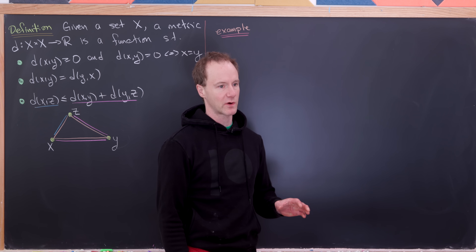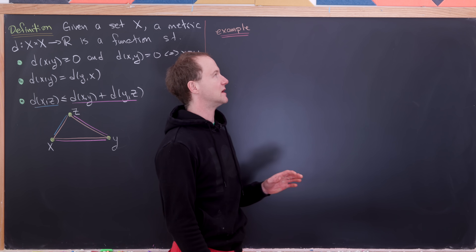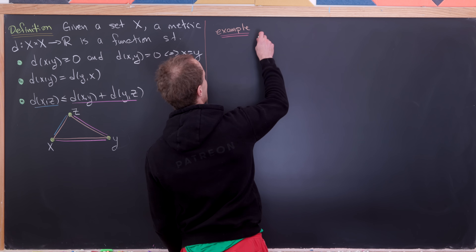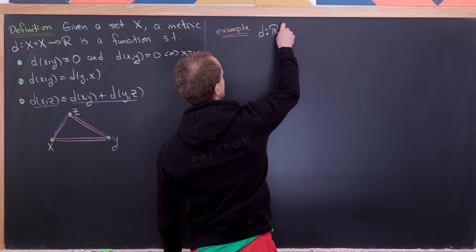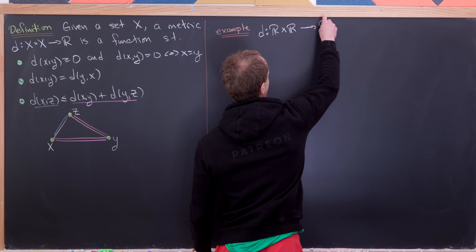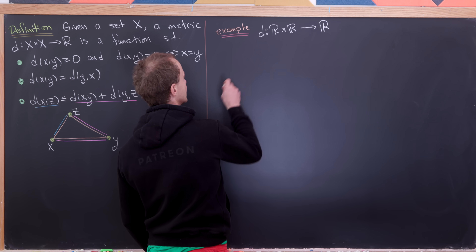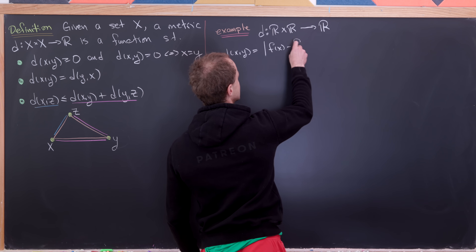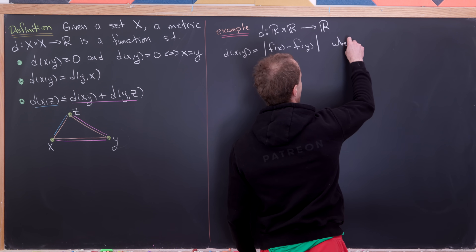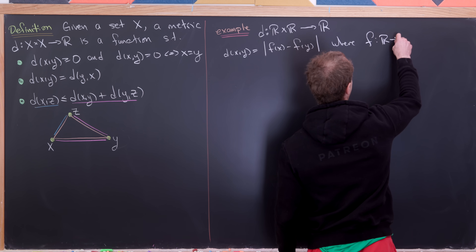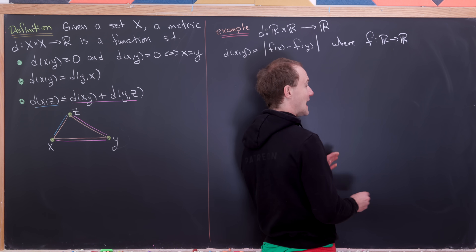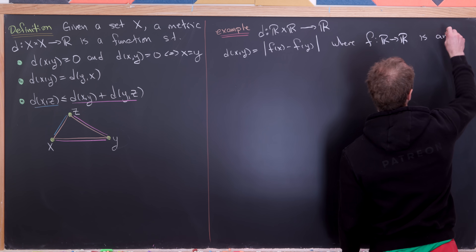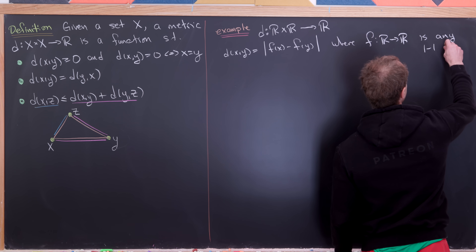We're going to look at two major examples. The first one is when distances are weird. So let's define the following metric on the real numbers: a function from R cross R to R defined as d(x,y) equals the absolute value of f(x) minus f(y), where f is a function from R to R. While f cannot be any function, it can in fact be any one-to-one function.